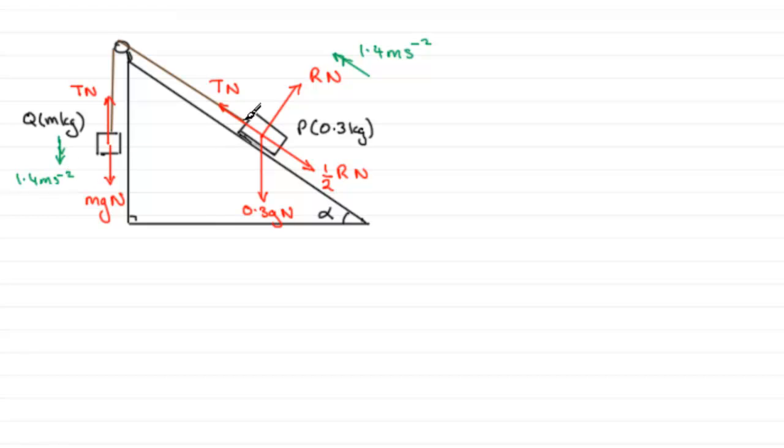And that's because the string is inelastic, okay, or I should say really inextensible, doesn't stretch. So as soon as Q starts to fall, P will start to move immediately up the plane.